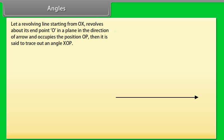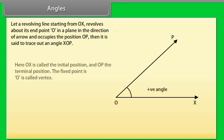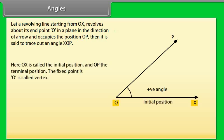What are angles? Let a revolving line starting from OX revolve about its end point O in a plane in the direction of the arrow and occupy the position OP. Then it is said to trace out angle XOP. Here, OX is called the initial position and OP the terminal position. The fixed point O is called the vertex.